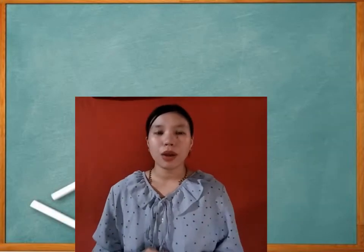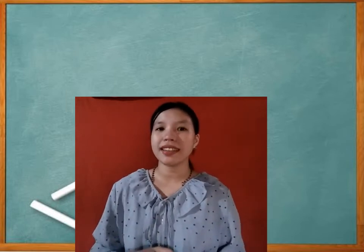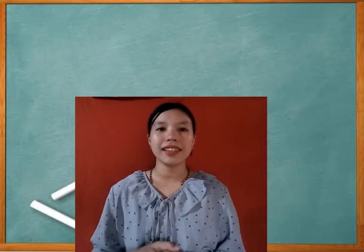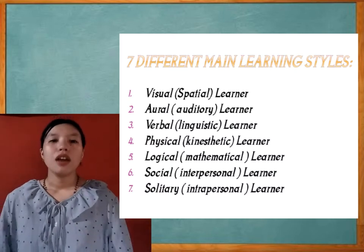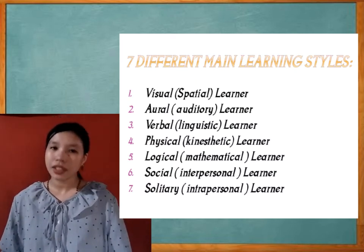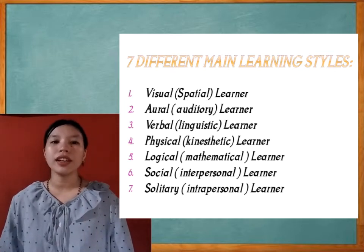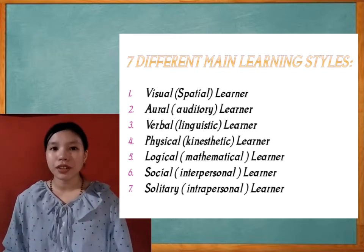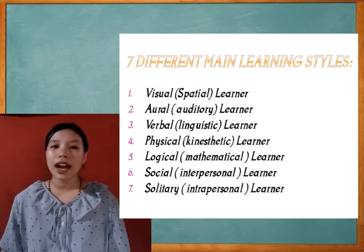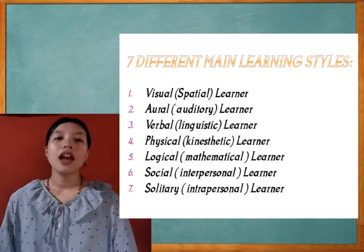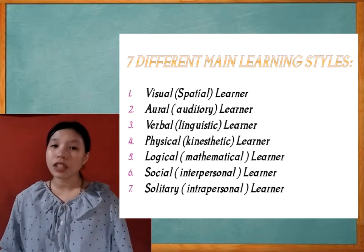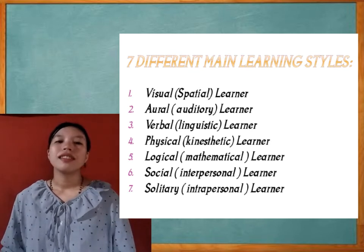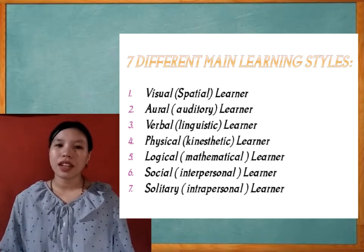That is all about the two perspectives of learning or thinking styles. Now we proceed to the seven different main learning styles. First is the visual or spatial learner. Second is the oral or auditory learner. Third is the verbal or linguistic learner. Fourth is the physical or kinesthetic learner. Fifth is the logical or mathematical learner. Sixth is the social or interpersonal learner. Seventh is the solitary or intrapersonal learner.